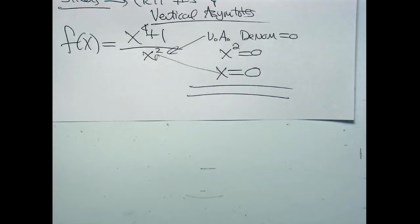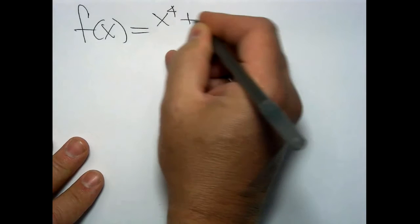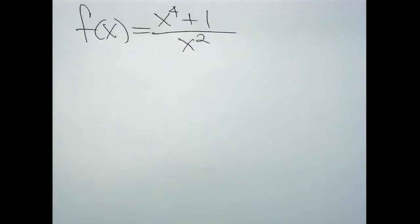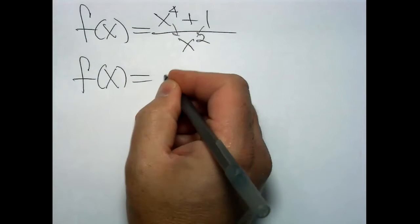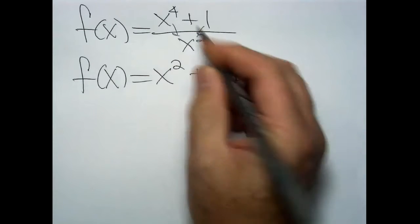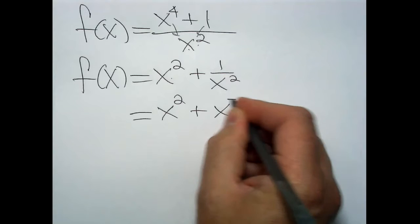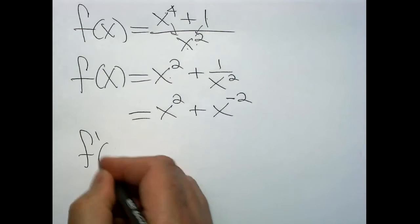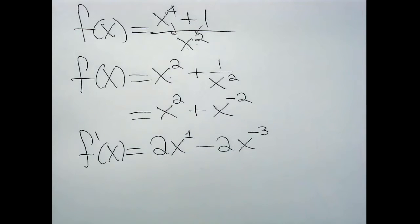Now we need critical numbers. f(x) = (x⁴ + 1) / x² can be split since the denominator is a monomial: x⁴/x² + 1/x², which in calculus notation is x² + x⁻². Taking f prime: the 2 comes down and we deduct one from the exponent; the −2 comes down and we deduct one from its exponent. So f prime = 2x − 2x⁻³.